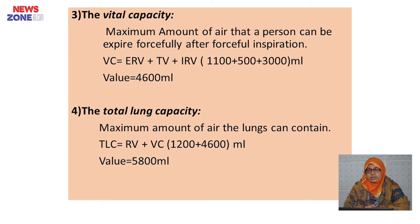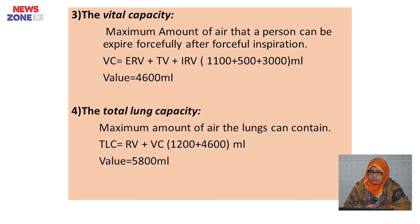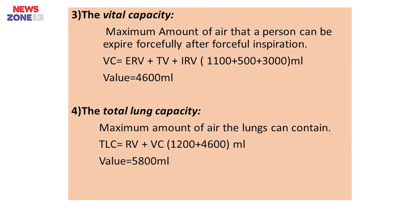Vital capacity is the maximum amount of air that can be expired forcefully after forceful inspiration — about 4600 mL. We calculate this by adding expiratory reserve volume plus tidal volume plus inspiratory reserve volume. Total lung capacity is the maximum amount of air that the lung can contain — about 5800 mL — calculated by adding vital capacity with residual volume.